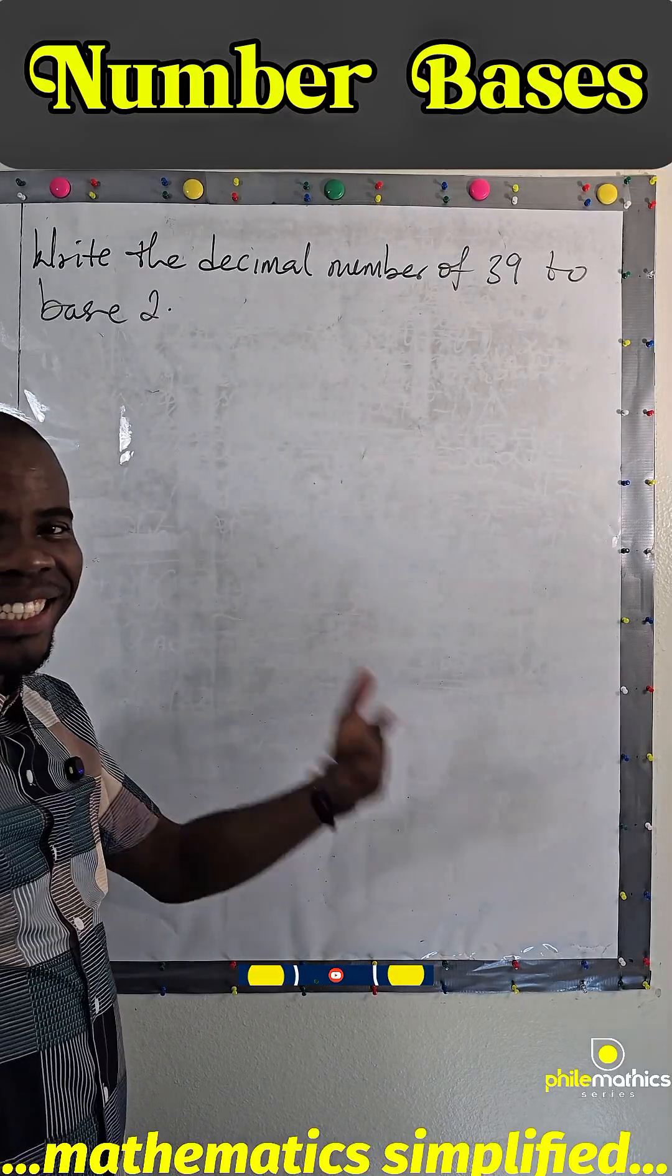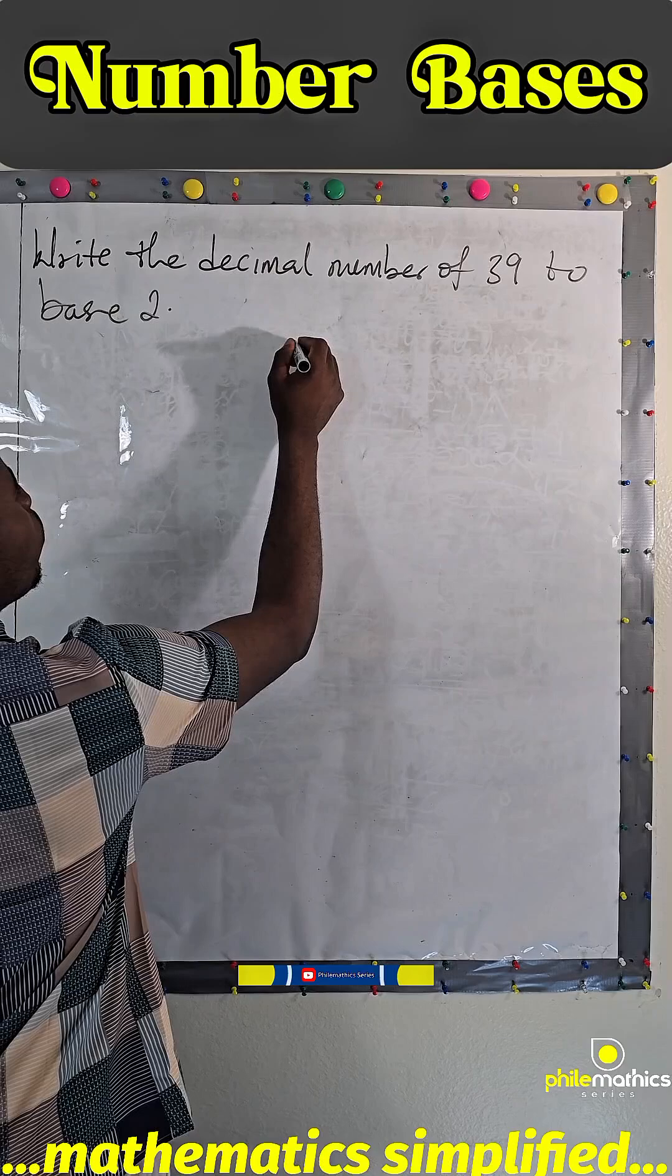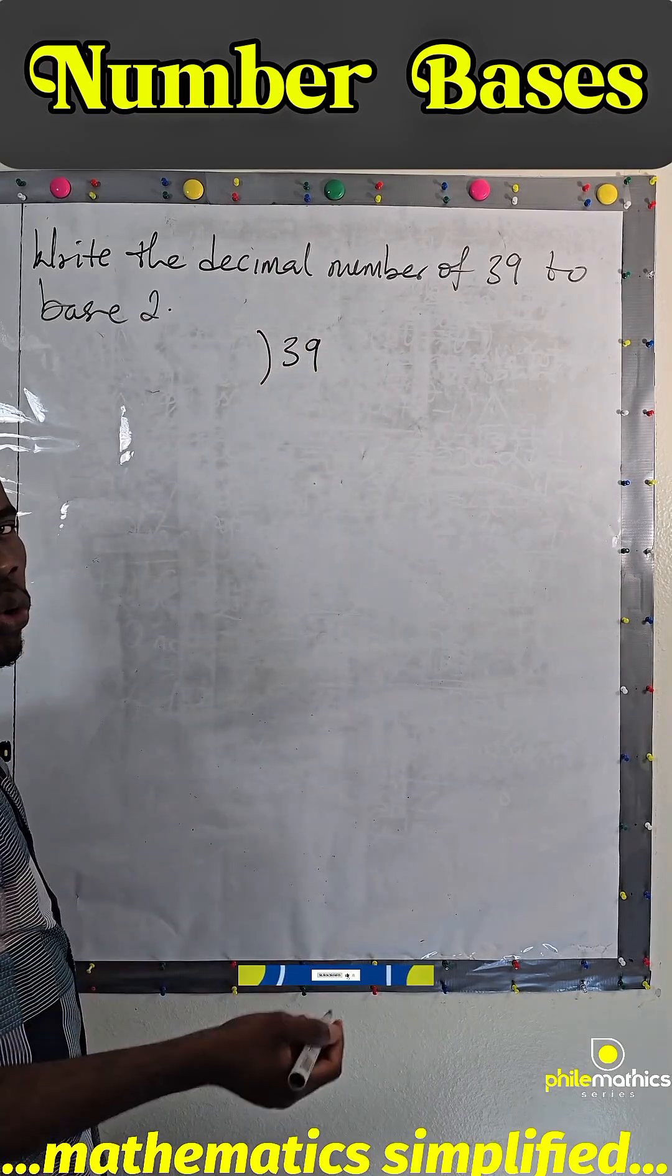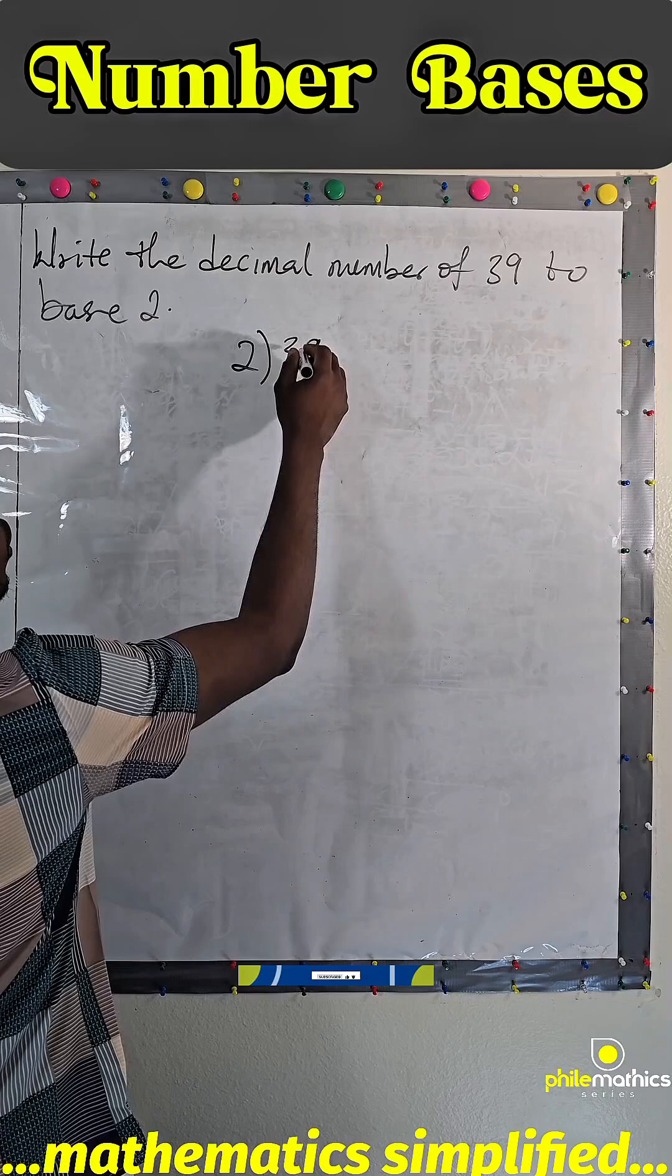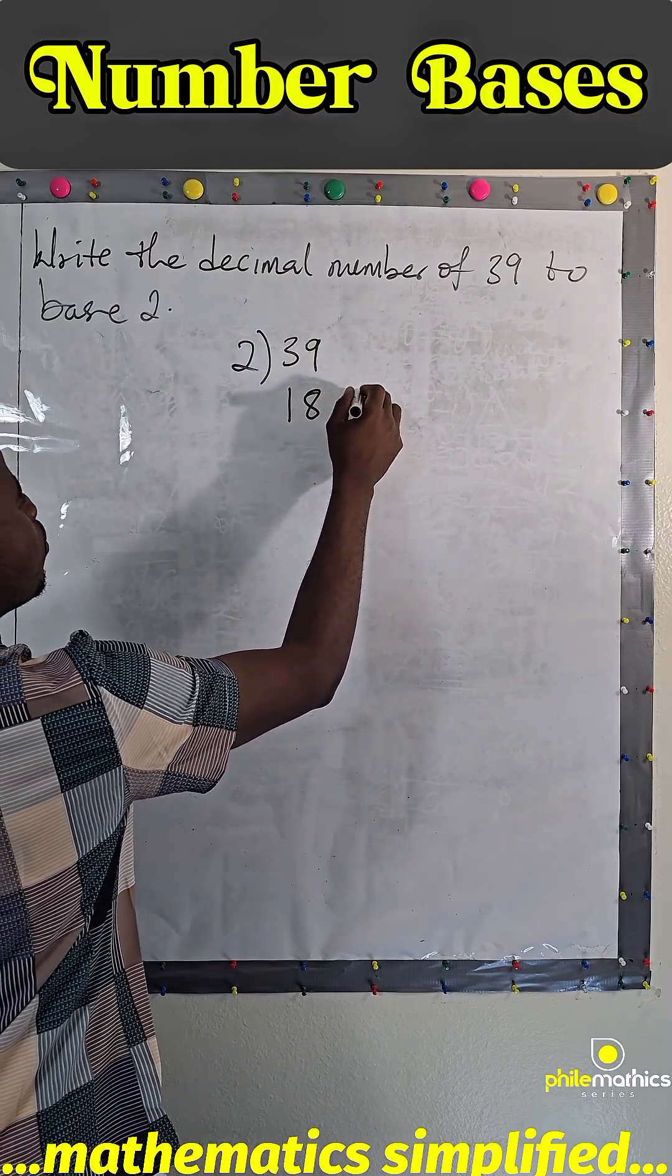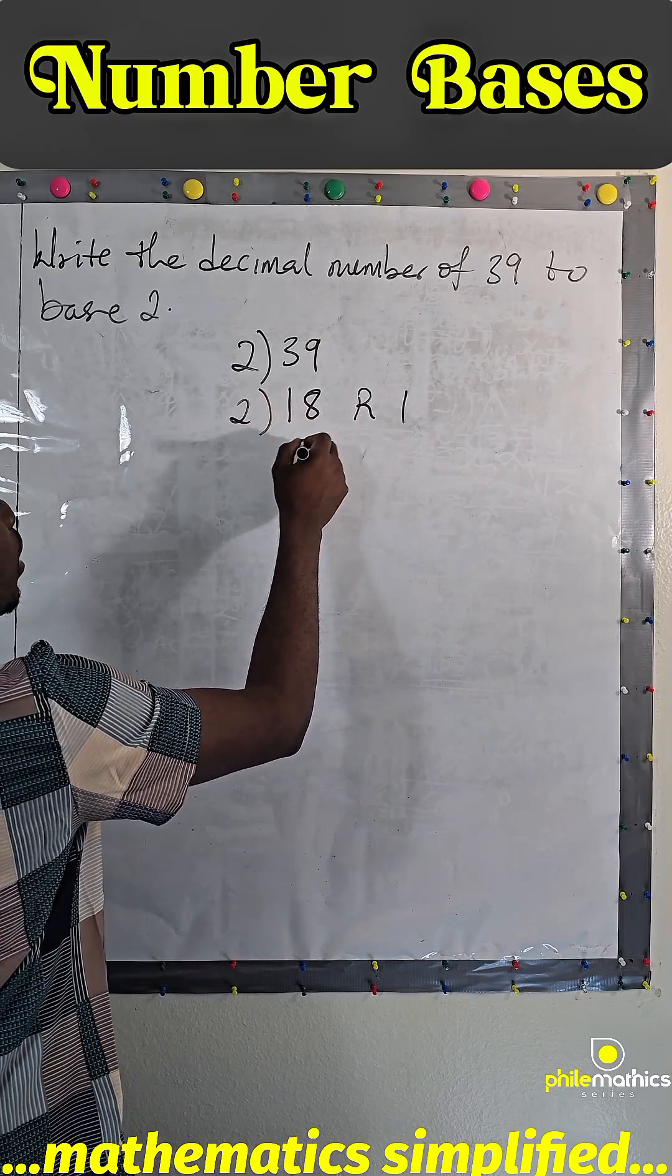To write the decimal number 39 to base 2, what we simply do is divide 39 by the base we want to convert to. So, 2 into 39 is 18 remainder 1, 2 into 18 is 9 remainder 0.